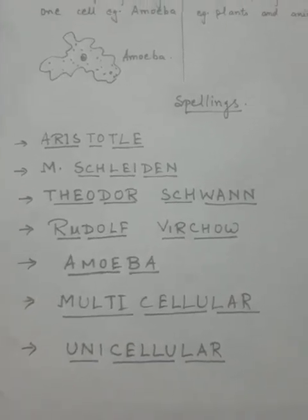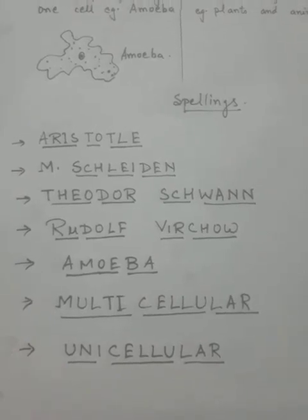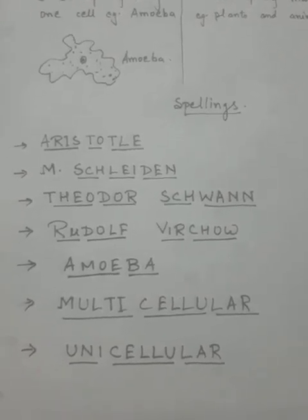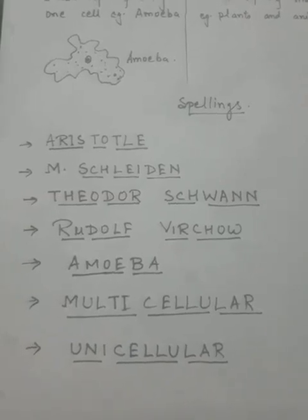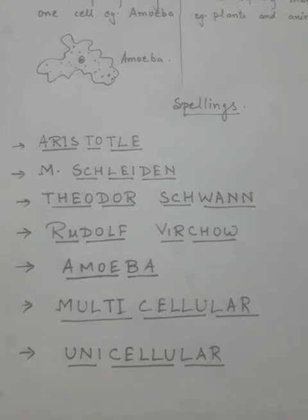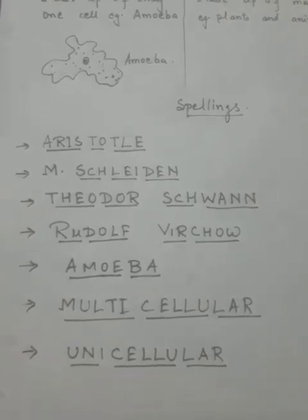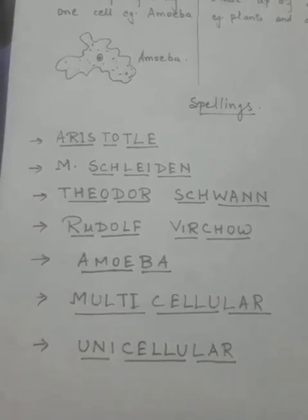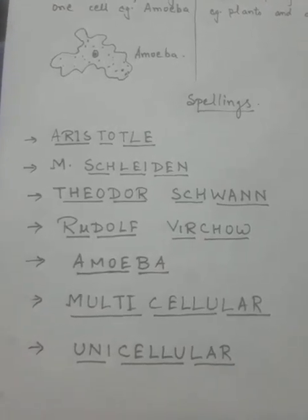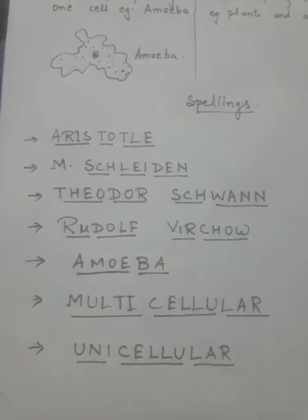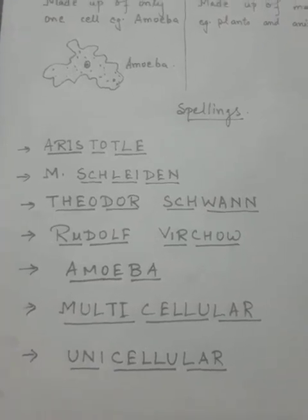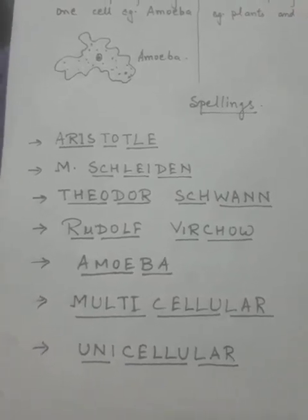Multicellular means having many cells in the body — M-U-L-T-I-C-E-L-L-U-L-A-R. Unicellular — U-N-I-C-E-L-L-U-L-A-R — refers to organisms having a single cell in their body.